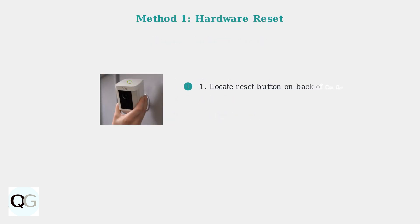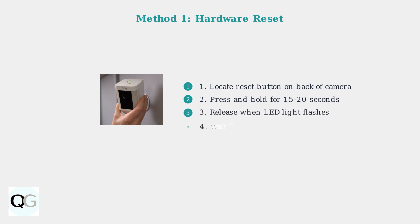Method 1 uses the physical reset button. First, locate the small reset button on the back of your camera unit. Press and hold this button for 15 to 20 seconds while the device has power. Release the button when you see the LED light begin flashing, then wait two to three minutes for the reset process to complete fully. This method works best for connectivity issues.